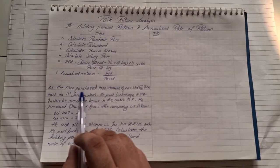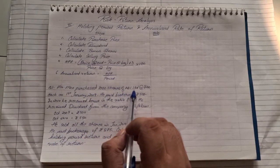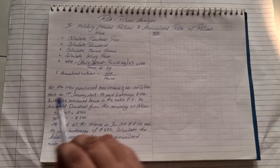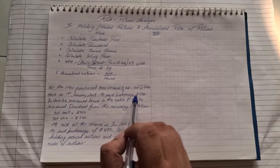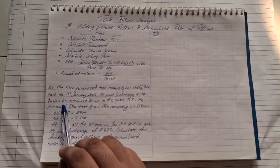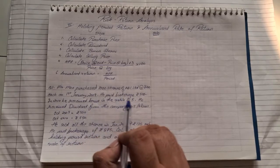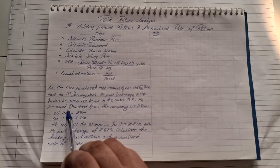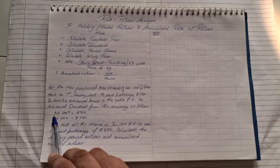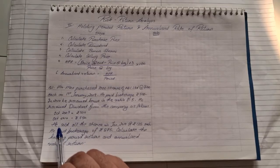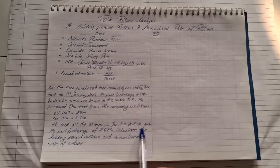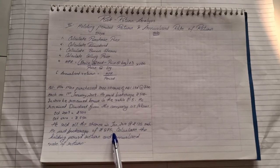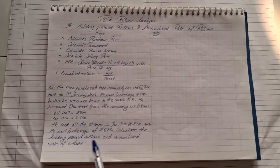We'll read the question first. Mr. Max purchased 1000 shares of ABC Limited at the rate of Rs. 100 each on 1st Jan 2009. He paid brokerage Rs. 500. In 2010, he received bonus in the ratio of 3 to 5. He received dividend from the company as follows. Then he sold all the shares in Jan 2010 at Rs. 135 each. And he paid a brokerage of Rs. 875.